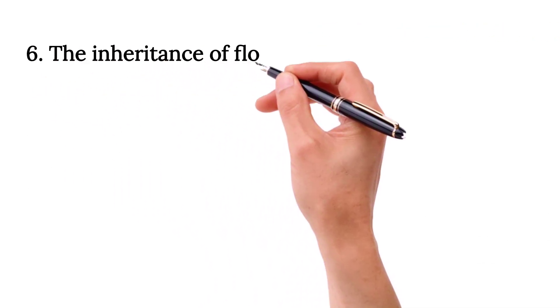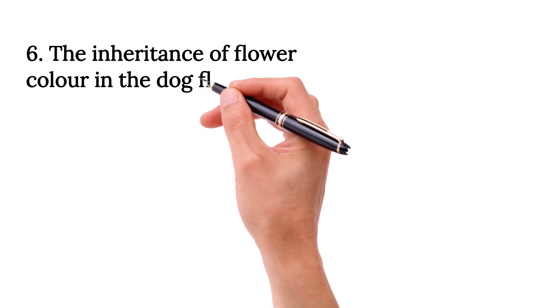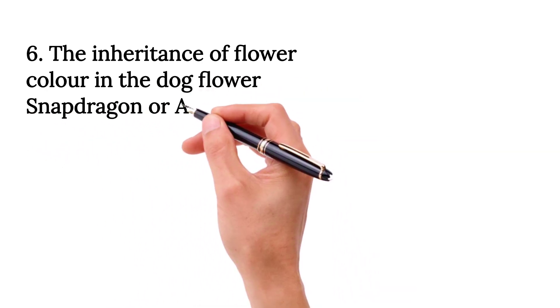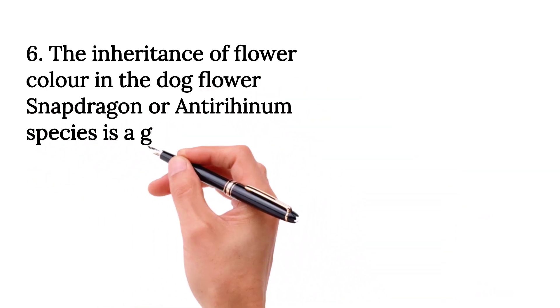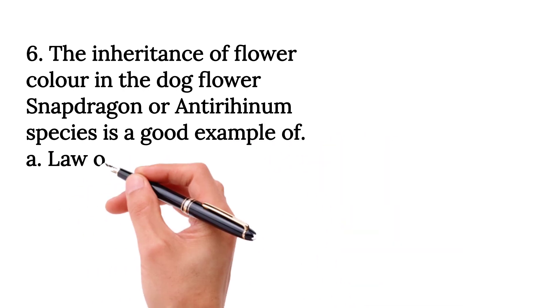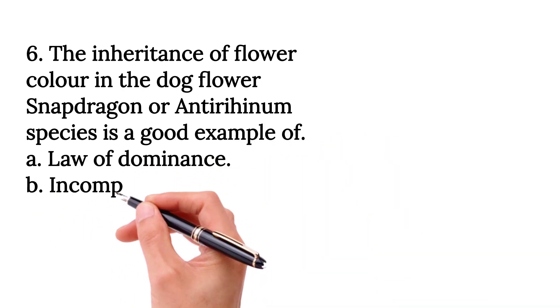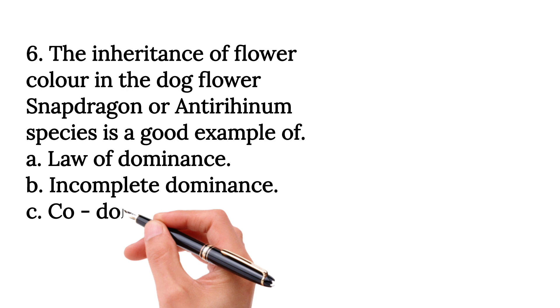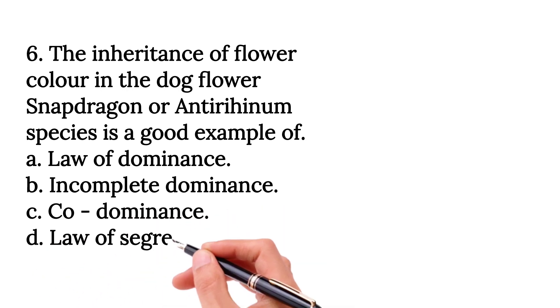The inheritance of flower color in the dog flower, snapdragon, or antirrhinum species is a good example of Option A, law of dominance, Option B, incomplete dominance, Option C, codominance, and Option D, law of segregation.